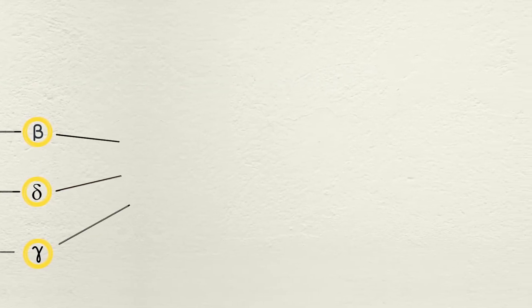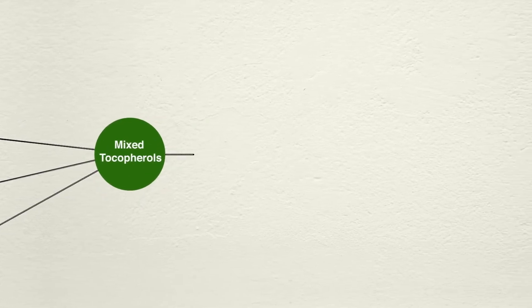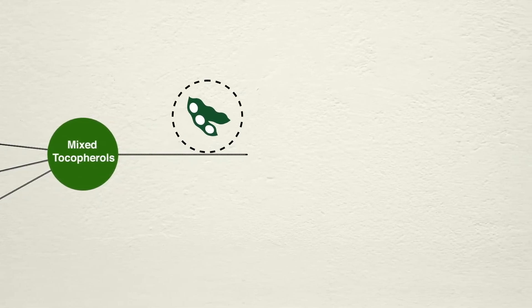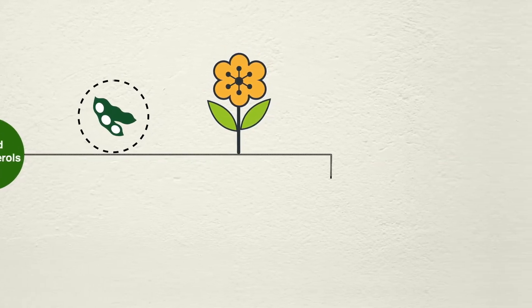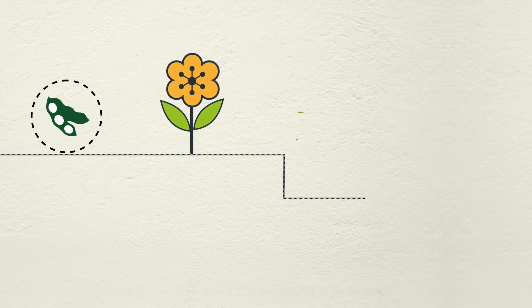The beta, gamma and delta isomers, along with low concentration of the alpha isomer, are known as mixed tocopherols. Derived from non-GMO soy and rapeseed oil distillates, these are used in protecting food and other blends from oxidative rancidity.